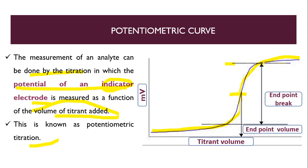The difference between the two points: this is our end point. There will be two points — equivalence point and end point. Equivalence point means when the analyte and titrant are present in equal amounts. End point means after the equivalence point, we are adding some titrant and there will be some difference in potential we are getting because of that particular titrant, not because of analyte. That is known as end point. This is our end point volume and end point breadth. Here we are getting EMF — that is our potential of the end point — and that we are going to measure as we add each drop.